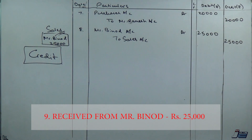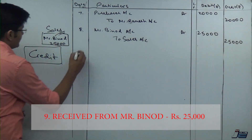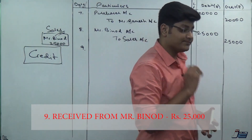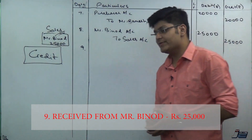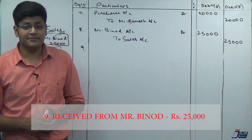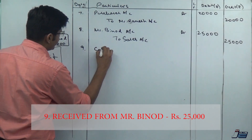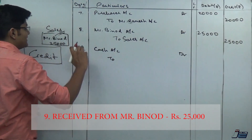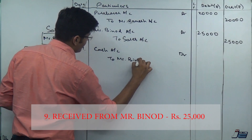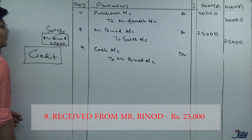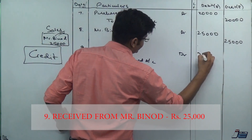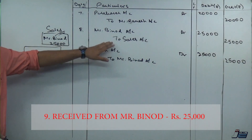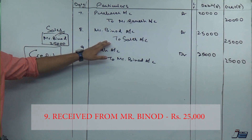Entry number nine: received from Mr. Binot, rupees 25,000. We had previously sold goods to Mr. Binot on credit for 25,000. Now he is paying us back. We received cash — nothing else is mentioned, so assume cash. Cash Account is debited. To whom did we receive it from? Mr. Binot. So: Cash Account debit to Mr. Binot Account, amount 25,000.